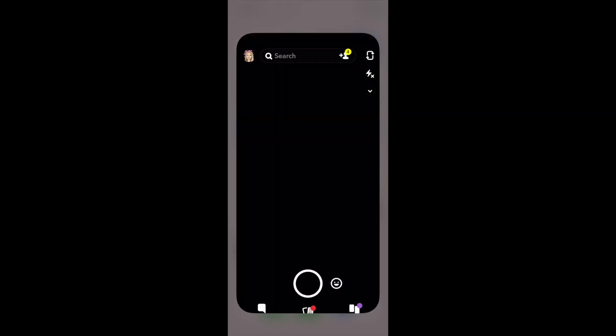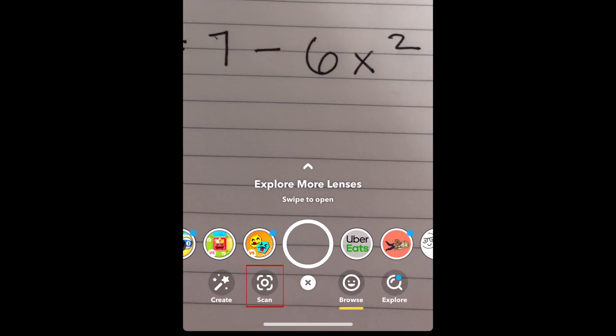To use the scan feature, open Snapchat and tap in the middle of your screen. Then tap Scan.